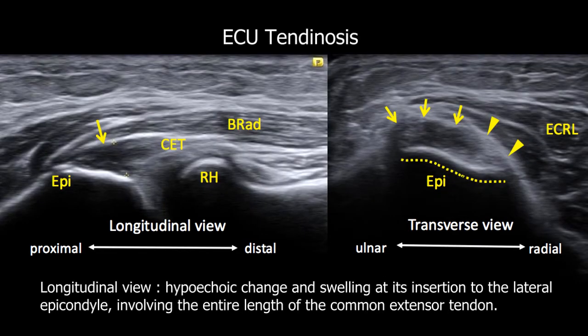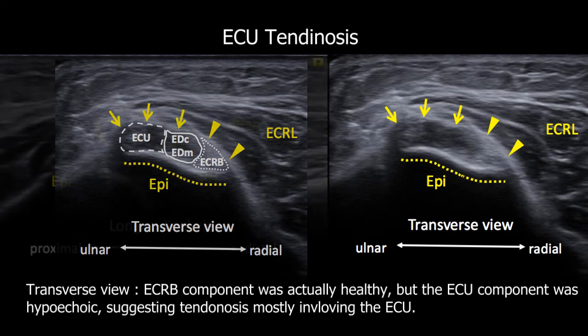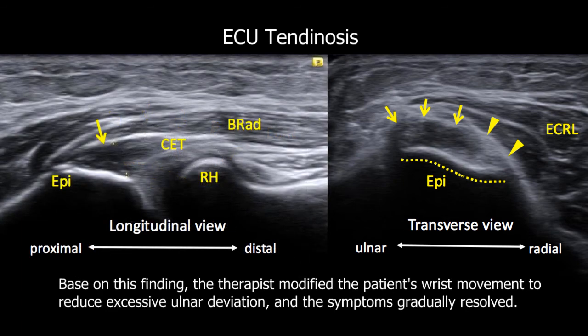In the second case, the longitudinal view of the common extensor tendon showed hypoechoic change and swelling at its insertion to the lateral epicondyle, involving the entire length of the common extensor tendon. However, the transverse view revealed that the ECRB component was actually healthy, but the ECU component was hypoechoic, suggesting tendinosis mostly involving the ECU. Based on this finding, the therapist modified the patient's wrist movement to reduce excessive ulnar deviation, and the symptoms gradually resolved.